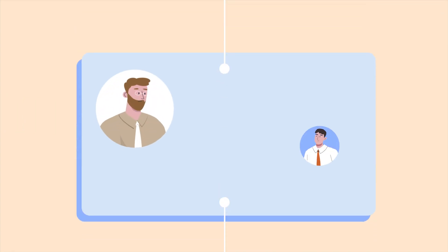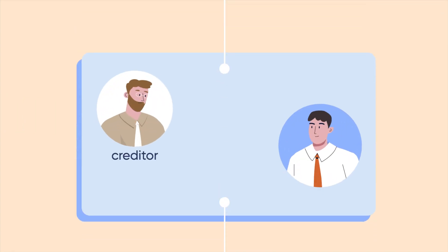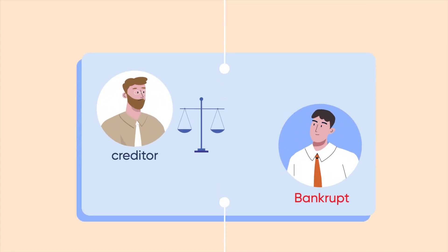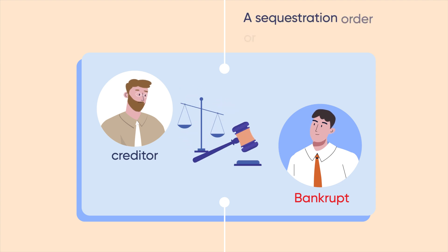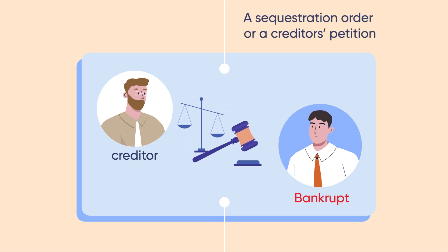The second way is that a creditor can make an individual bankrupt through the court process. This is referred to as a sequestration order or a creditor's petition.